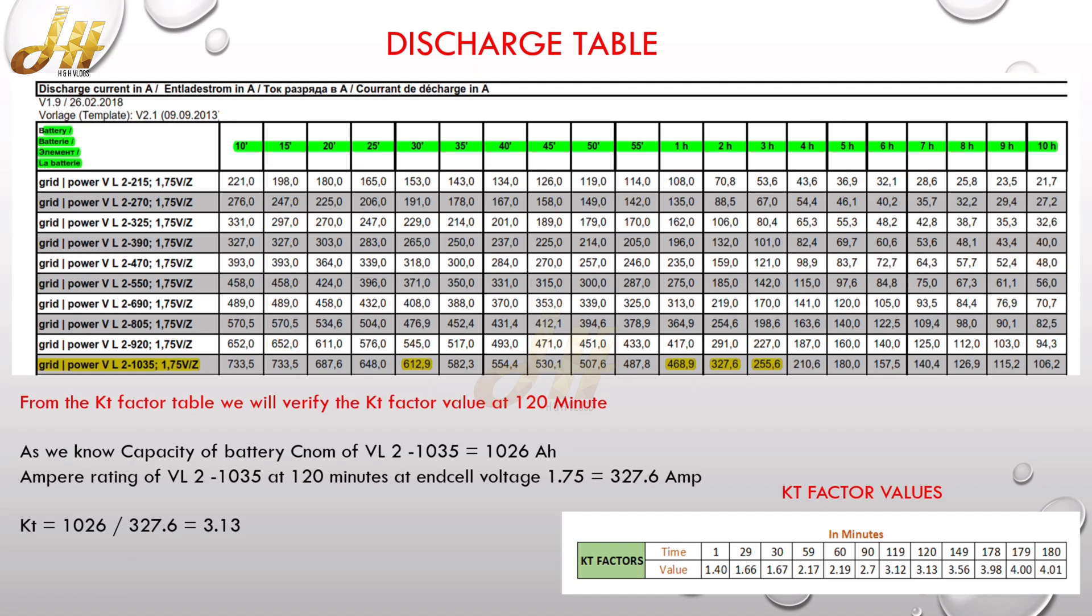So this is the discharge table of the battery at 25 degrees C. So I highlighted the battery model number, which is VL2-1035. We need to select the discharge table carefully. Since we are considering the end cell voltage is 1.75, we need to consider the discharge table also as of 1.75. So now we can see the KT factor values.